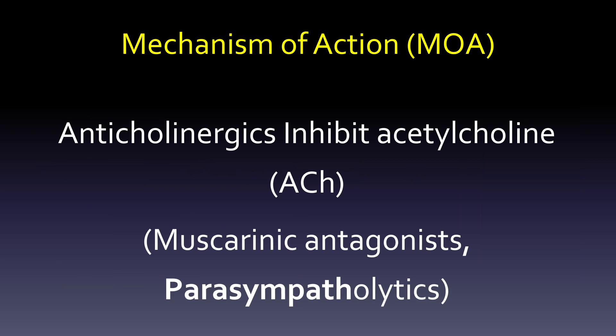On to the mechanism of action: anticholinergics inhibit acetylcholine (ACh), a neurotransmitter. The issue is that it has two synonyms — muscarinic antagonists, which we sometimes call anti-muscarinics, and parasympatholytics. We want to keep those three together because we're going to have the opposite three when we get to cholinergics.